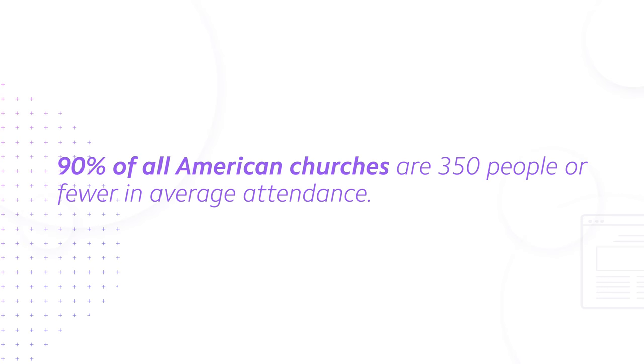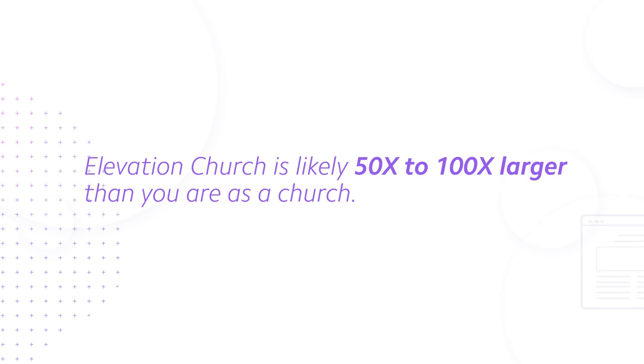The thesis of that video is very simple. 90% of all American churches are 350 people or fewer in average attendance. So as a baseline, Elevation Church is likely 50 to 100 times larger than you are as a church. Looking at the tactics of a church that different from you in terms of infrastructure and just blindly copying those tactics — that's an easy way to lose. You can learn from a unicorn church like Elevation by studying their strategy, just don't copy their tactics.